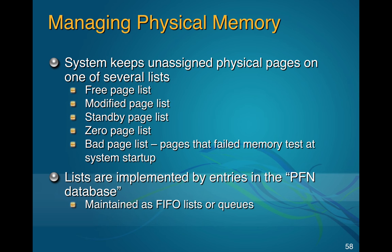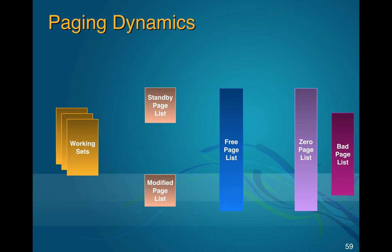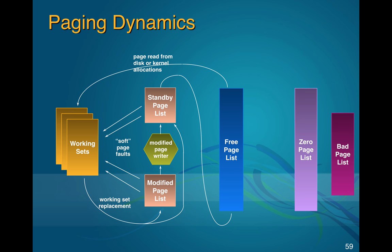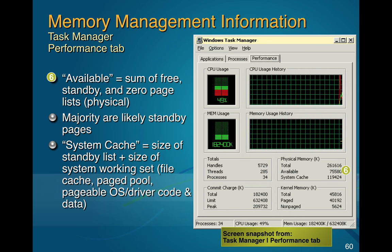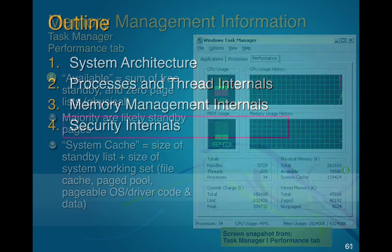Windows memory management is amazingly complicated. When you do Linux heap overflows it's easy, but on Windows there's like a dozen heaps in each program — many different versions of page lists and parts of memory. They're all implemented by a special database, with pages of memory in various states and conditions under which you flip things from one to another. They call it the working set in old Windows XP. I wouldn't worry too much about this but it's useful to know some of the terms.